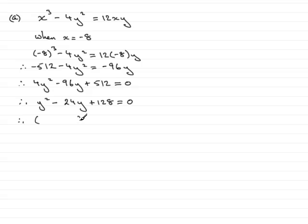This factorizes, so we have brackets equals zero with a y in each. Looking at this, you can see it's -8 and -16. If you struggle with factorizing this, you could use the quadratic formula and get the same results.